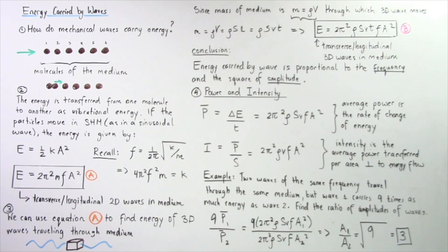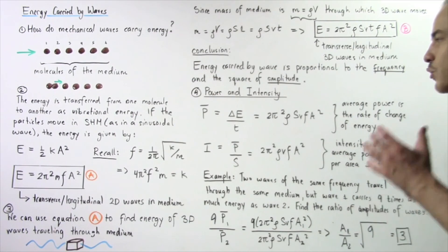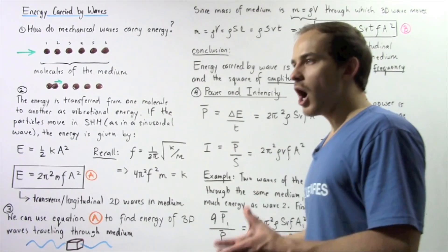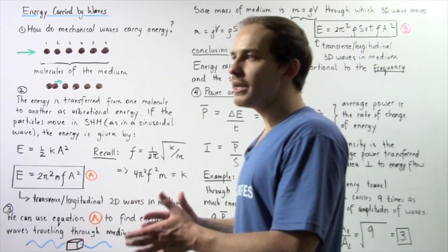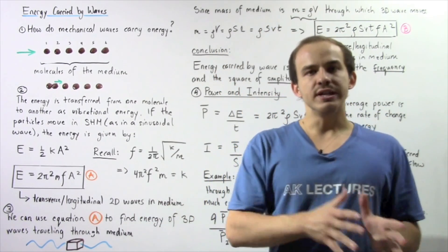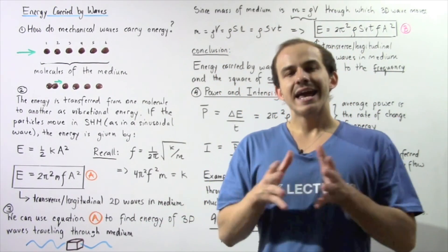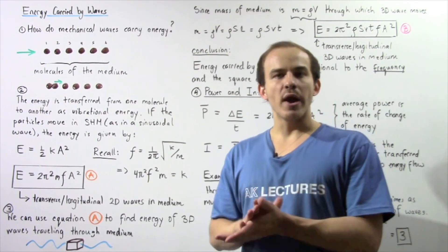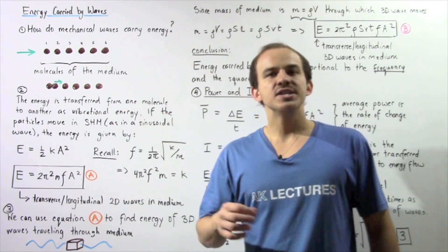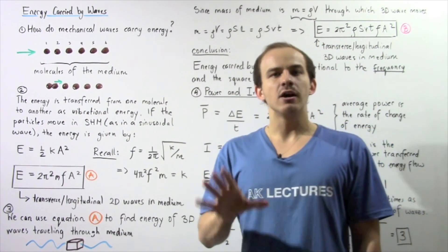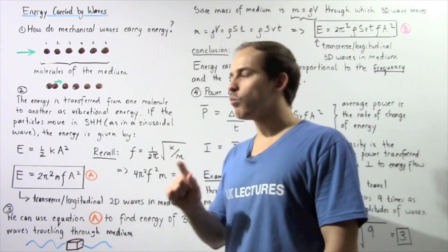The square root of 9 is simply 3. So the ratio of the amplitude of wave one to the amplitude of wave two is 3 to 1. In other words, the amplitude of wave one is 3 times that of the amplitude of wave two.